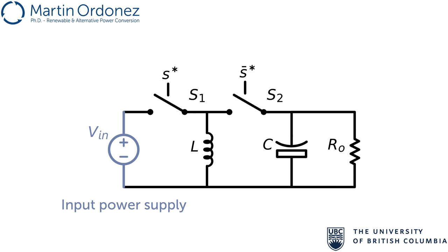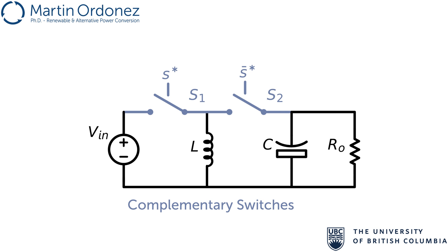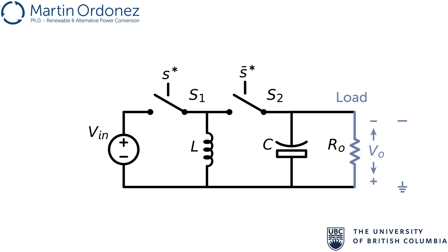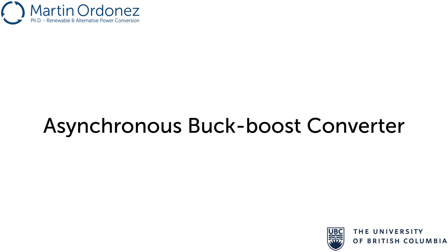The circuit takes the input voltage source and uses two complementary switches, S1 and S2, to alternatively connect either the input by closing S1 and opening S2, or opening S1 and closing S2 to the inductor L, which by interacting with the capacitor C, produces a DC output voltage VOUT with reverse polarity, which is applied to the load.